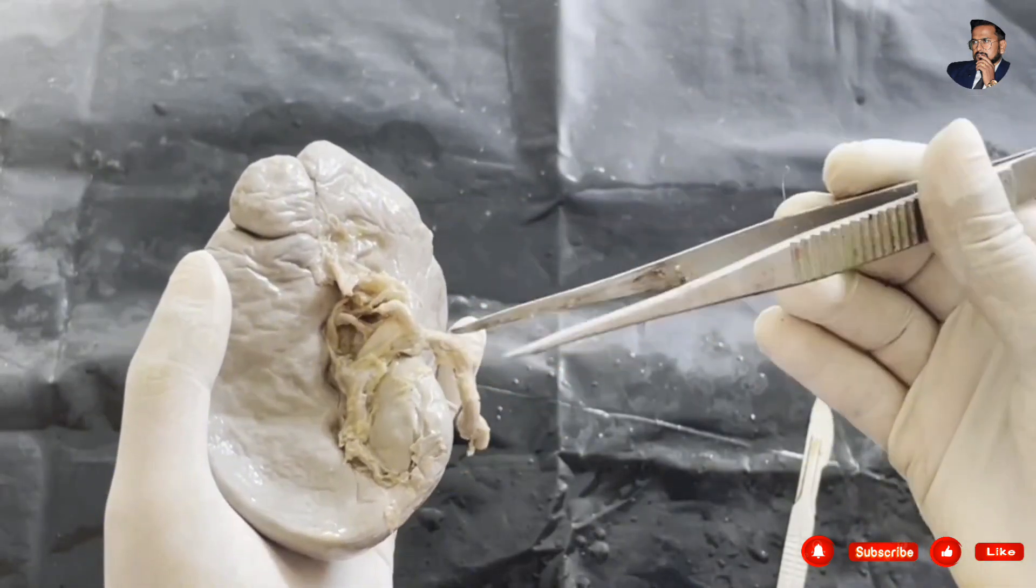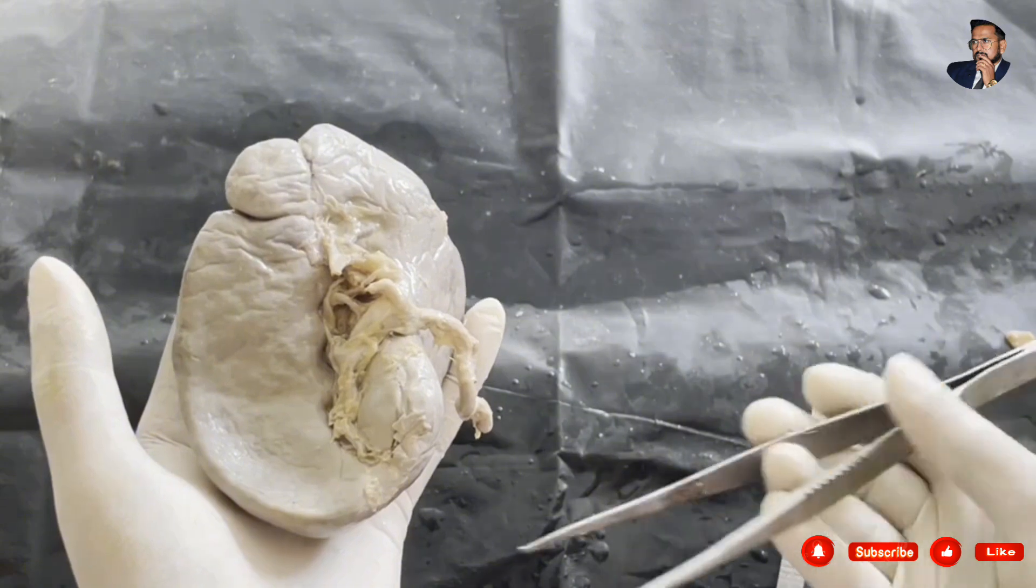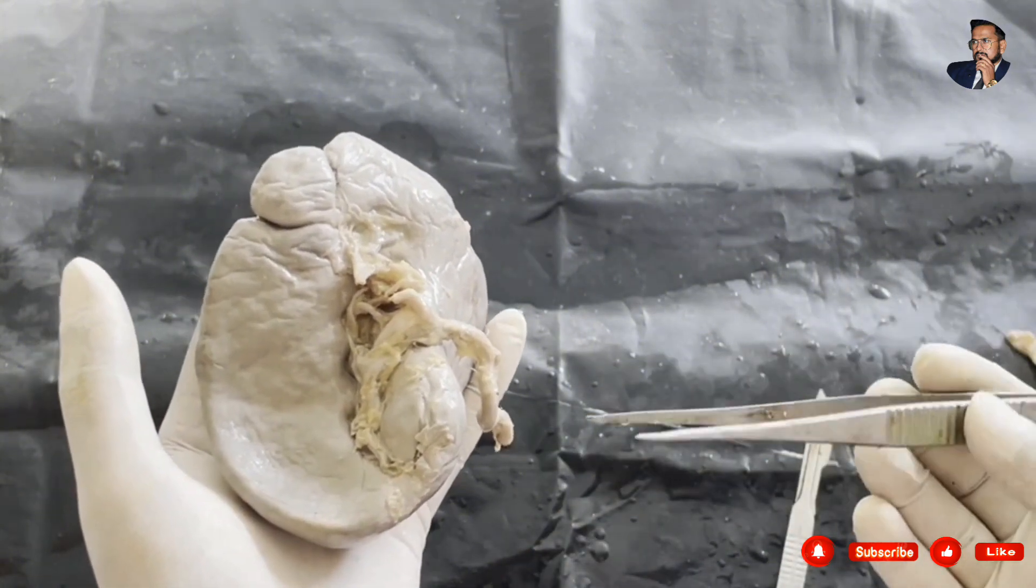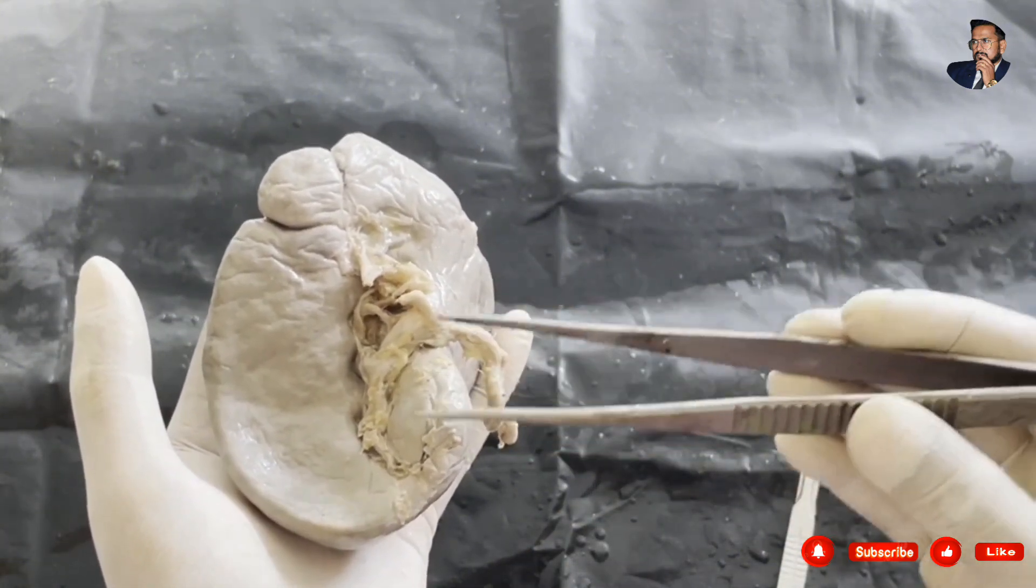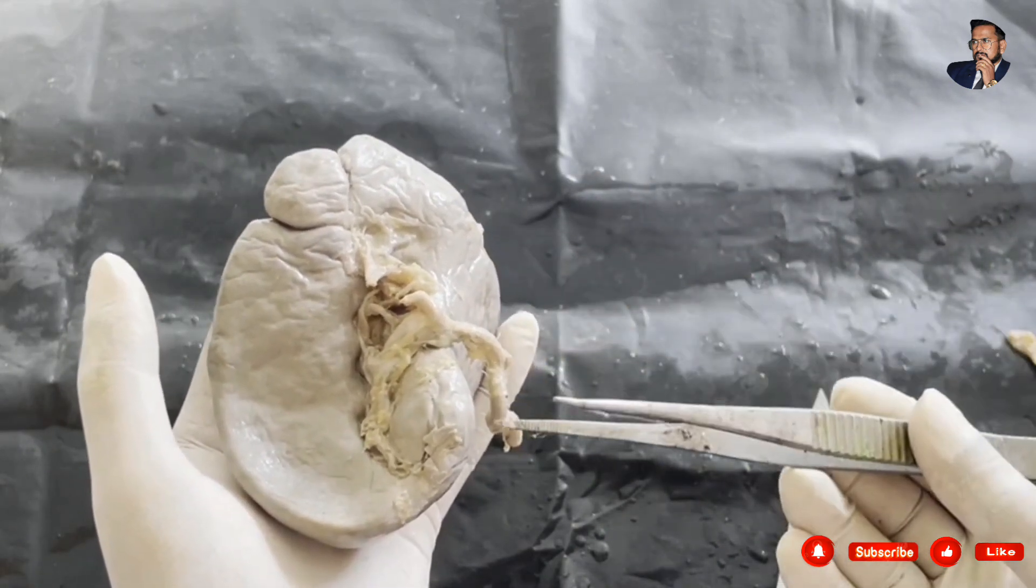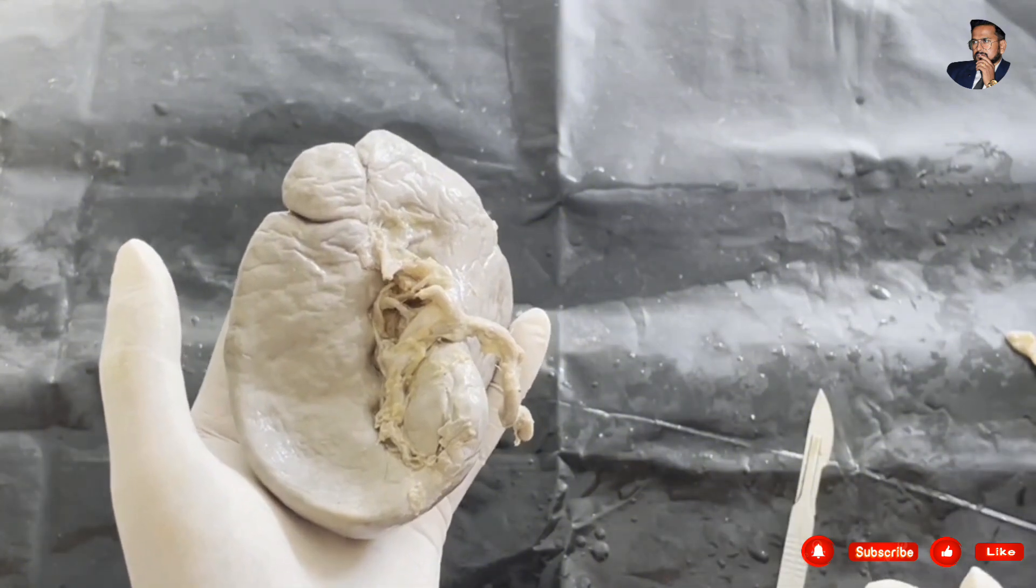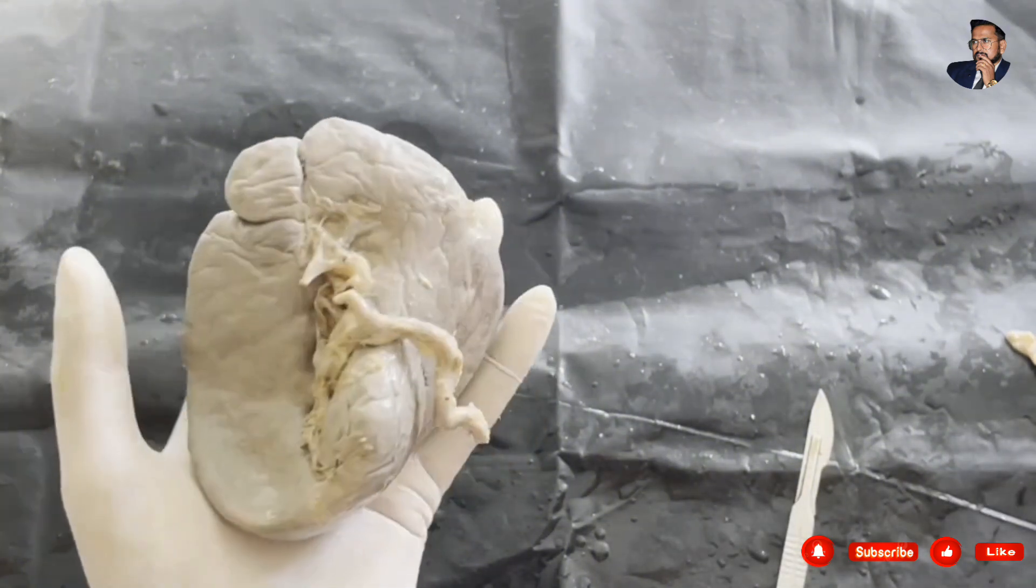Let us know the clinical aspects. Splenomegaly is enlargement of the spleen due to cirrhosis of liver or kala-azar. Splenectomy is removal of the spleen. Kehr sign is when there is rupture of the spleen causing pain on the left shoulder or near the left hypochondrium.